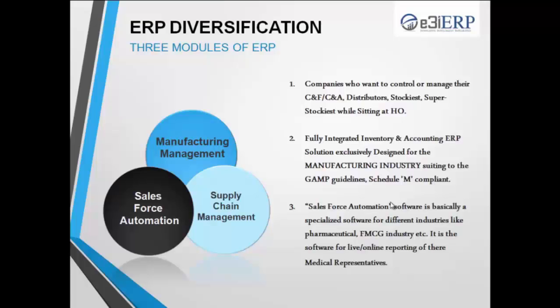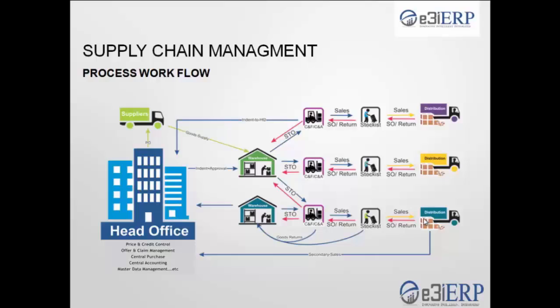For supply chain management, the complete C&F and C&A can be managed through our software — be it stockist, super stockist, or distribution. Prices, rates, and offers can be controlled centrally from the head office for C&A and C&F. Purchase and indent processes can also be managed and approved centrally. You can manage central accounting and master data management. Returns, approvals at every level, supply management, and tertiary sales management are all handled through this centralized system.